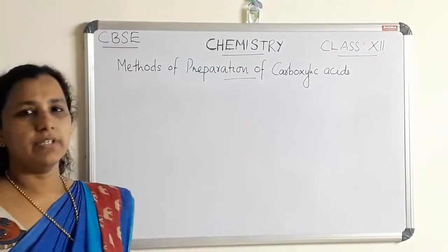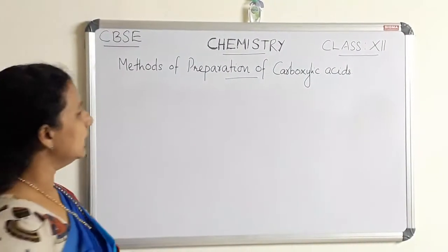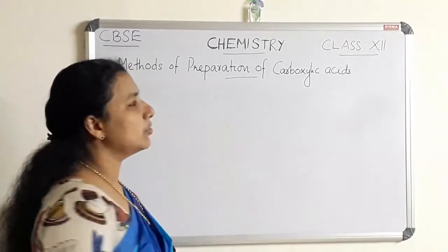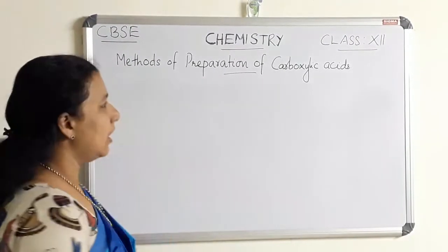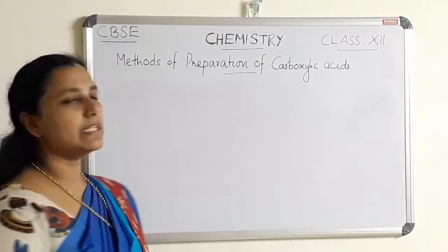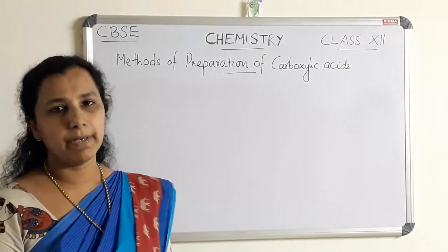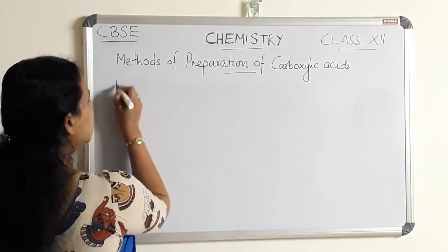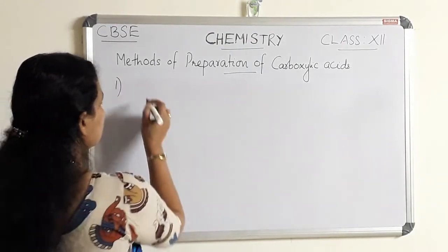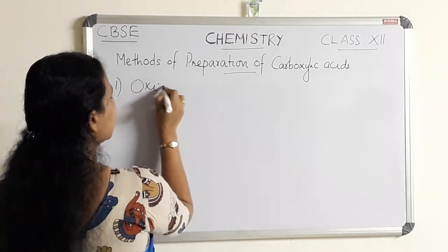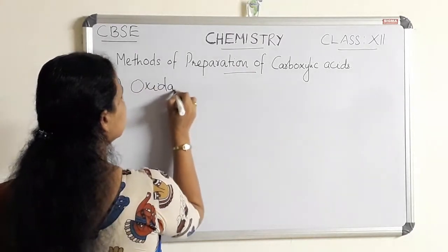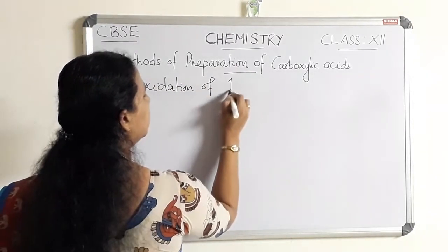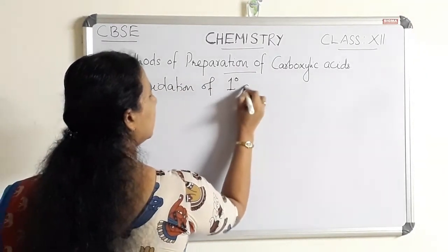In this session, we are going to learn what are the methods of preparation of carboxylic acids — how carboxylic acids are prepared by different methods. The first method is oxidation of primary alcohol.